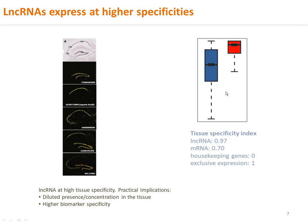Overall, lncRNA tissue specificity is about 0.97, which is much higher than mRNA at 0.7. To explain the tissue specificity index: if a gene is expressed everywhere such as a housekeeping gene, the specificity index is 0. If a gene is expressed exclusively in only one cell type, the specificity index is 1.